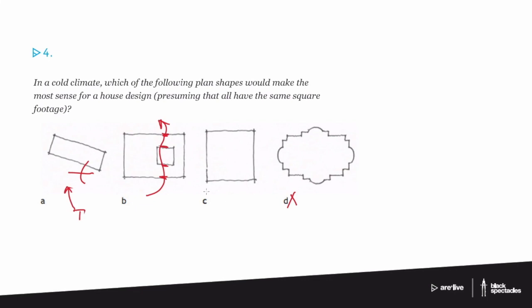So the answer is C. It's going to be the most straightforward and efficient. A better answer would actually be a circle because it would be even more efficient in terms of wall area to floor plan.